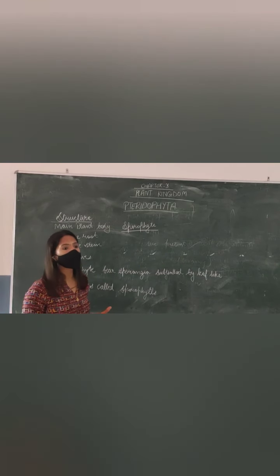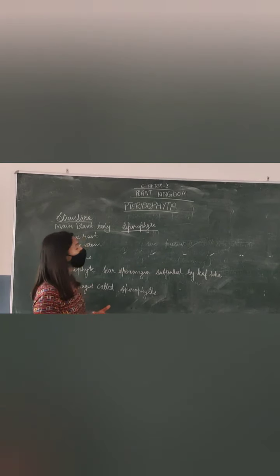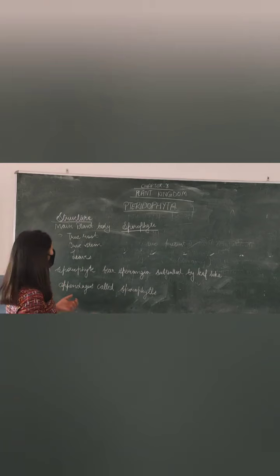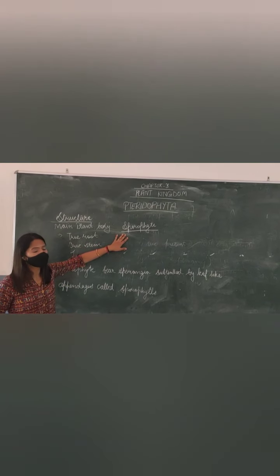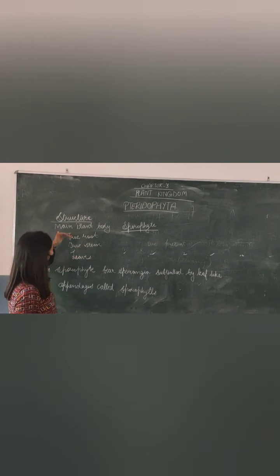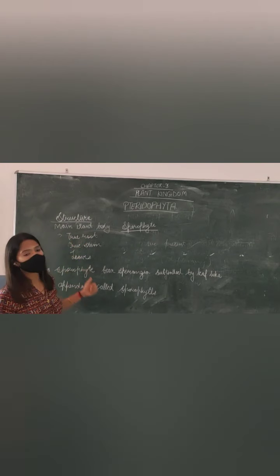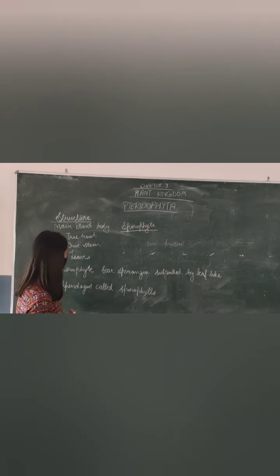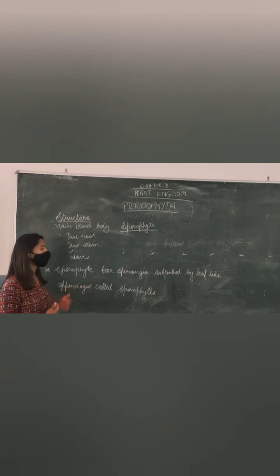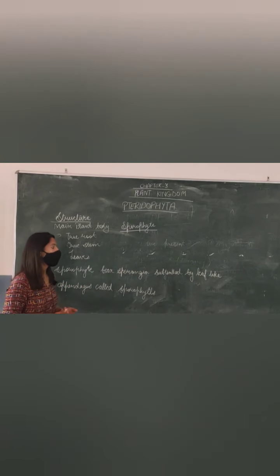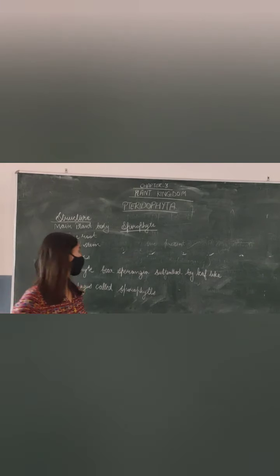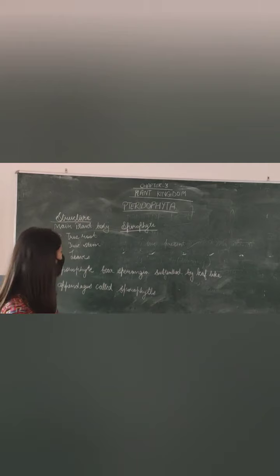So the main part of the plant is the sporophyte, which we see. The sporophyte is the dominant phase in the life cycle of the pteridophyte. They have true roots, stems, and leaves. The sporophyte bears sporangia, subtended by leaf-like appendages called sporophylls.